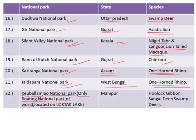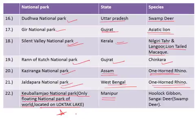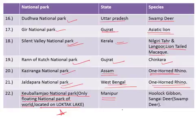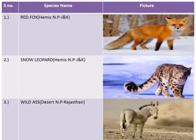Keibul Lamjao National Park has been especially important — questions from this topic have appeared in UPSC for the previous three years. Questions were also asked in the Coal India exam. This national park is famous for the Hoolock Gibbons, a species belonging to the family of apes, and also for the Sangai deer.